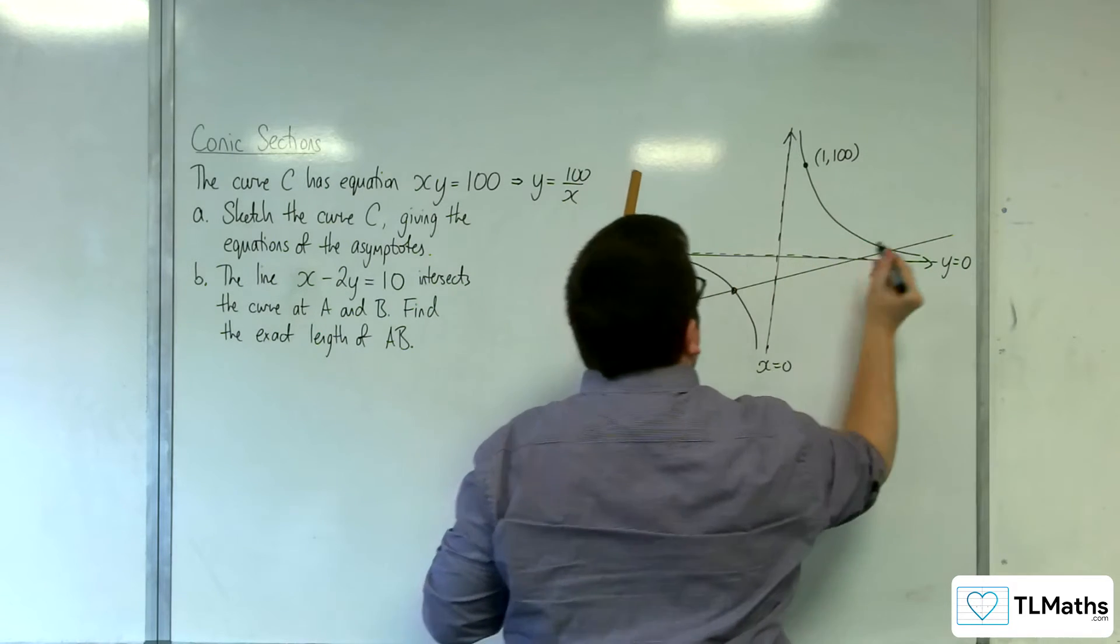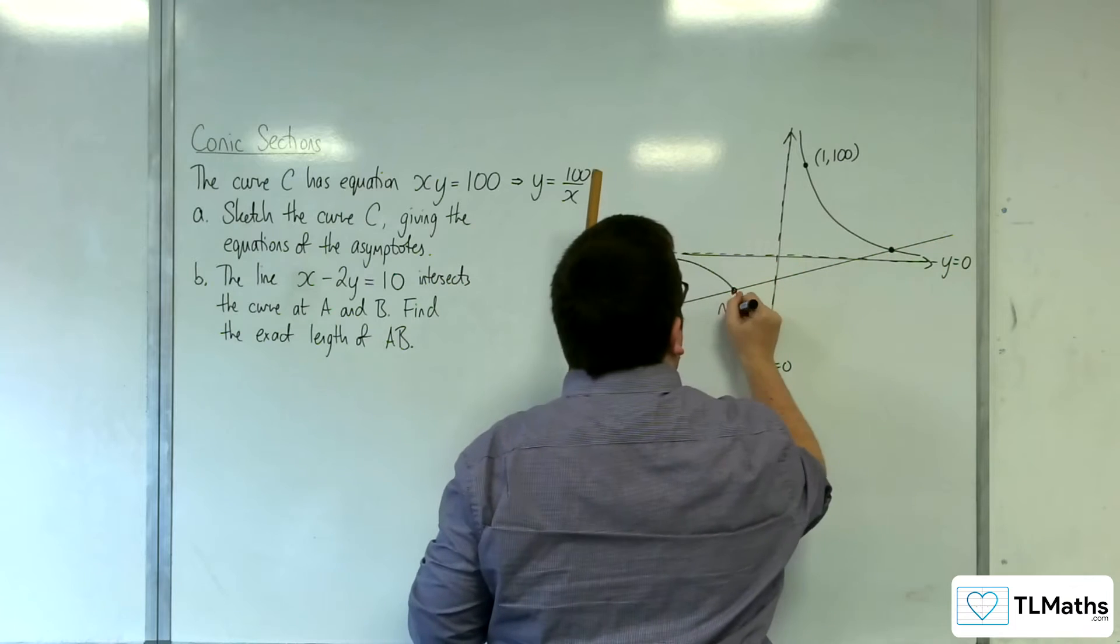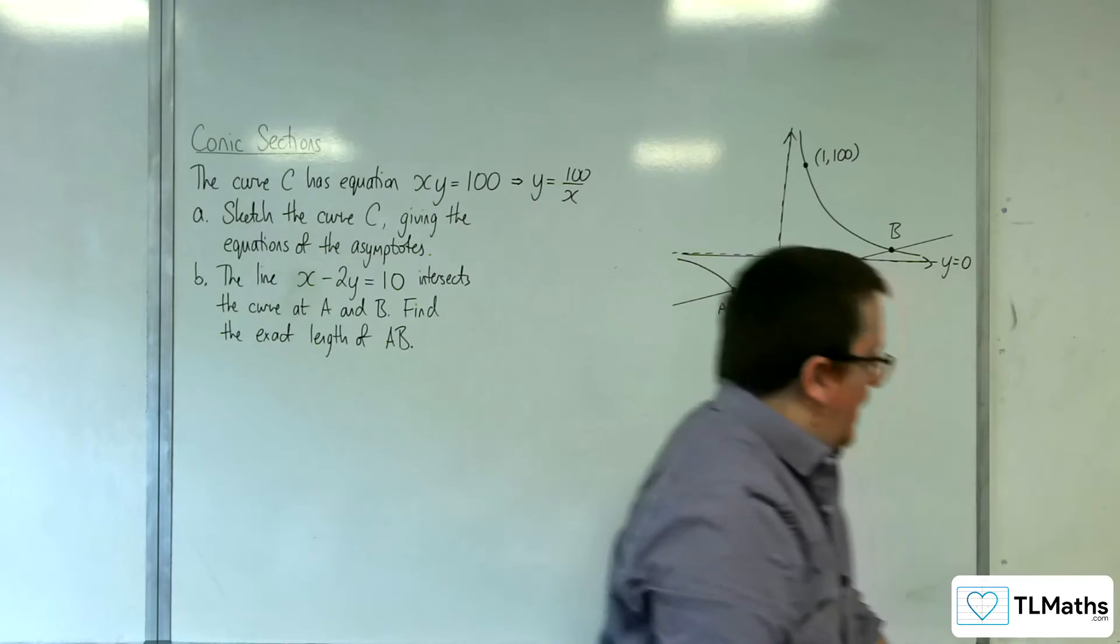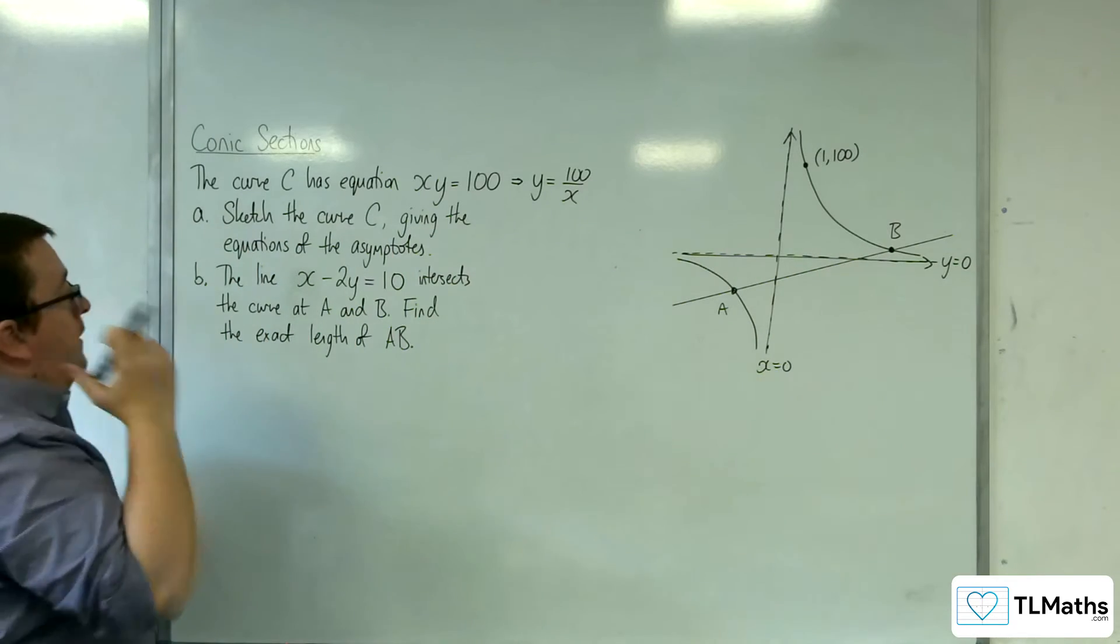And so here are the points A and B. I can label them whichever way around I like. Makes sense to do it that way.